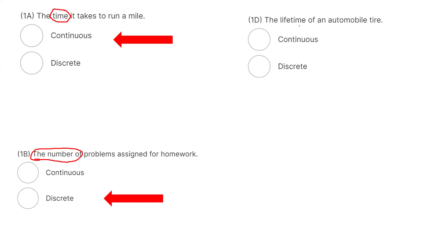The lifetime of an automobile tire. The lifetime can be two days, three days, one week, a month, two years, five years. It is a continuous random variable. It has different measurements.